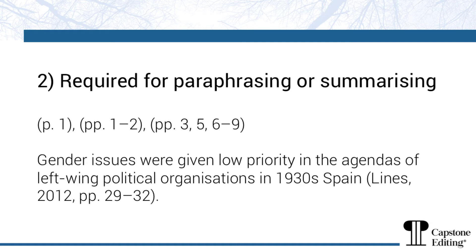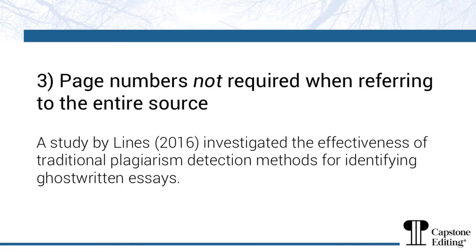This example shows how this looks in a paragraph. If you're citing a work in its entirety rather than just an idea within it, page numbers are not required. Just mention the author or authors and the publication year. For example, a study by Lyons (2016) investigated the effectiveness of traditional plagiarism detection methods for identifying ghost-written essays.